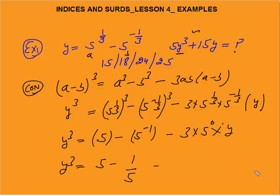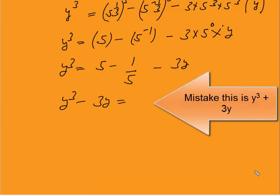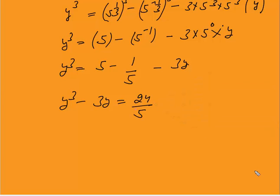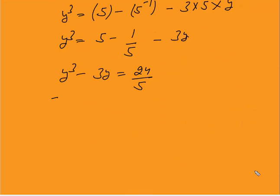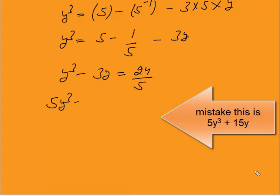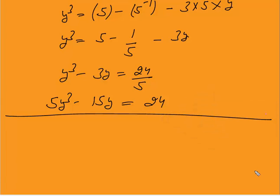Following this, y³ equals 5 minus 5^(-1) minus 3y, which is 5 minus 1/5 minus 3y. So y³ + 3y equals 5 - 1/5 = 24/5. Now you need 5y³ + 15y — multiply both sides by 5: the answer is 24. You can solve this question in an exam in less than a minute.